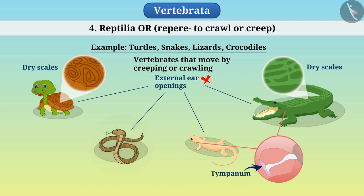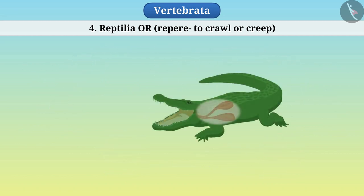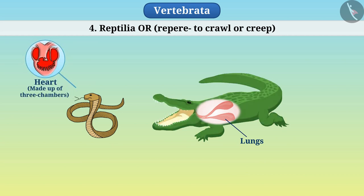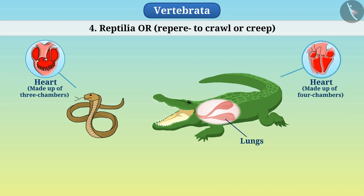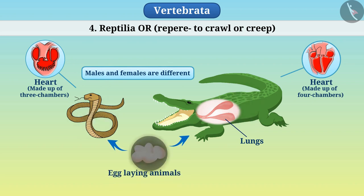Some organisms do not have legs, but some organisms have two pairs of legs. They breathe with the help of lungs. In most reptiles, the heart is made up of three chambers, while the crocodile has four chambers in its heart. Males and females are different. They are all egg-laying animals and their eggs are protected by a tough outer shell.